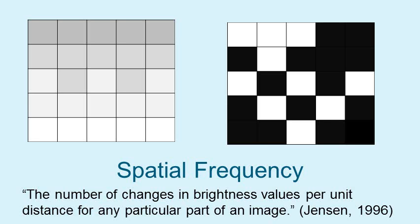In this slide, the graphic on the left illustrates an example of low spatial frequency, whereas the graphic on the right represents a high spatial frequency. Notice that the left graphic shows very small changes in grey tones across the geographic space depicted, whereas the graphic on the right depicts radical changes in black and white throughout the geographic space.